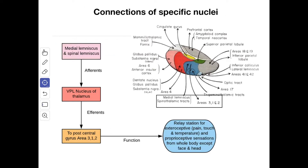Next we'll see the connections of the ventral posterolateral nucleus. The afferents of the ventral posterolateral nucleus of the thalamus are the medial lemniscus and spinal lemniscus, and they terminate into the ventral posterolateral nucleus of the thalamus. From here the efferent goes to the post-central gyrus, area number 3, 1, 2. The function is it acts as a relay station for the exteroceptive — that is pain, touch, and temperature sensation — and proprioceptive sensation from the whole body except the face and head.